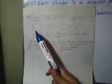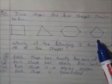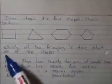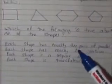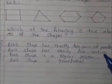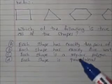Dean drew four shapes shown below: a square, a triangle, a hexagon, and a pentagon. Which of the following is true about all of the shapes? Option A: each shape has exactly two pairs of parallel sides. Option B: each shape has exactly five vertices. Option C: each shape is a regular polygon. Option D: each shape is a quadrilateral.